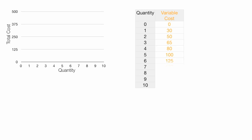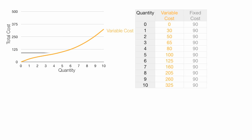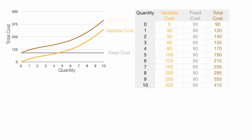Let me put in a graph and some numbers. First, I'm going to plot quantity right there, and a variable cost, and the variable cost curve looks something like that. I have fixed cost, and it's a flat line. And total cost, which is the brown curve right there. It turns out the variable cost plus fixed cost is equal to total cost.